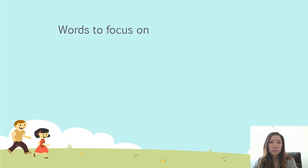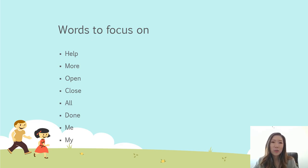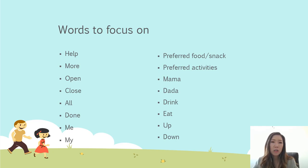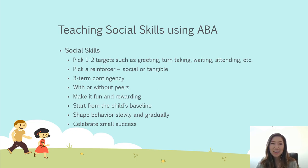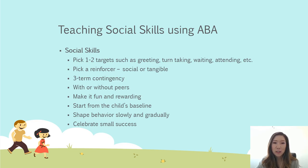For words to focus on, pick a few — don't pick 10 or 20 words at once because it's way too much. Pick one to two words that you feel will be helpful and your child will get reinforcement right away. I usually focus on action words and words that lead to tangibles and activities: help, more, open, close, all done, me, mine, preferred food or snack, preferred activities, mama, dada, drink, eat, up, down. You can also use ABA to teach social skills — pick one to two targets like greeting, saying hi or bye, turn-taking, waiting, or attending to tasks.